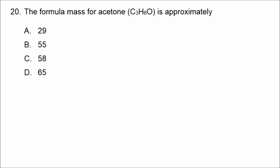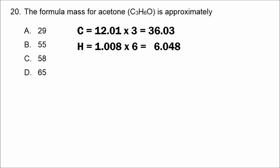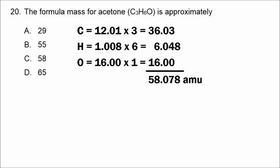Number twenty involves a calculation. Carbon has an atomic mass of 12.01; we have three carbons, so multiply by 3. Hydrogen has an atomic mass of 1.008; multiply by 6 because there are six hydrogens. Oxygen has an atomic mass of 16.00 and there is only one oxygen. Adding all these masses together gives a total formula mass of 58.078. The correct answer is C.